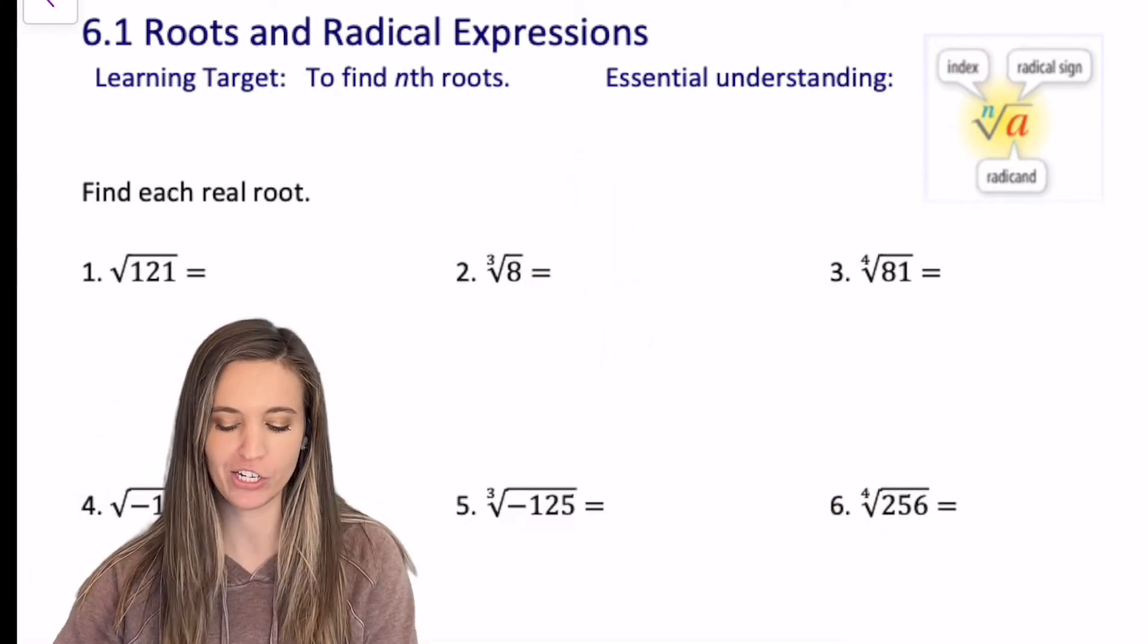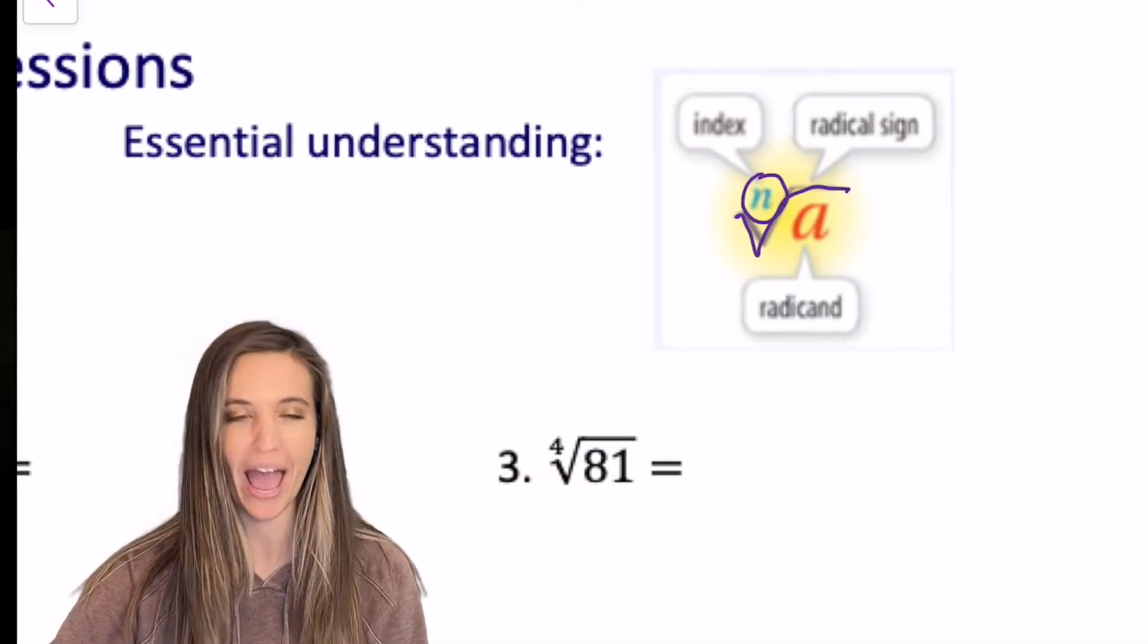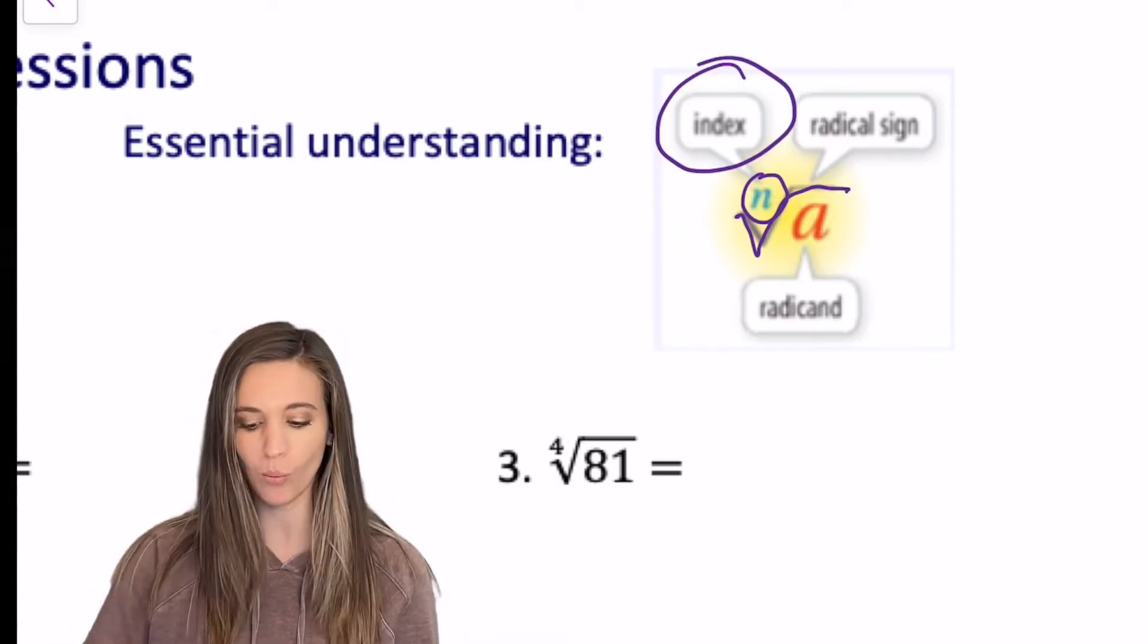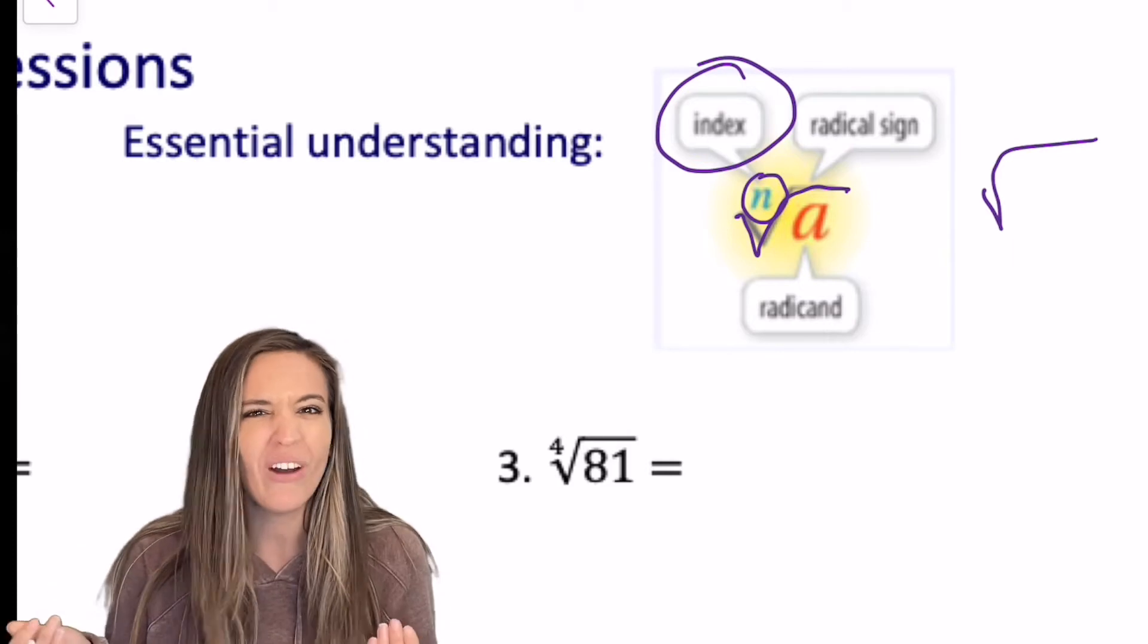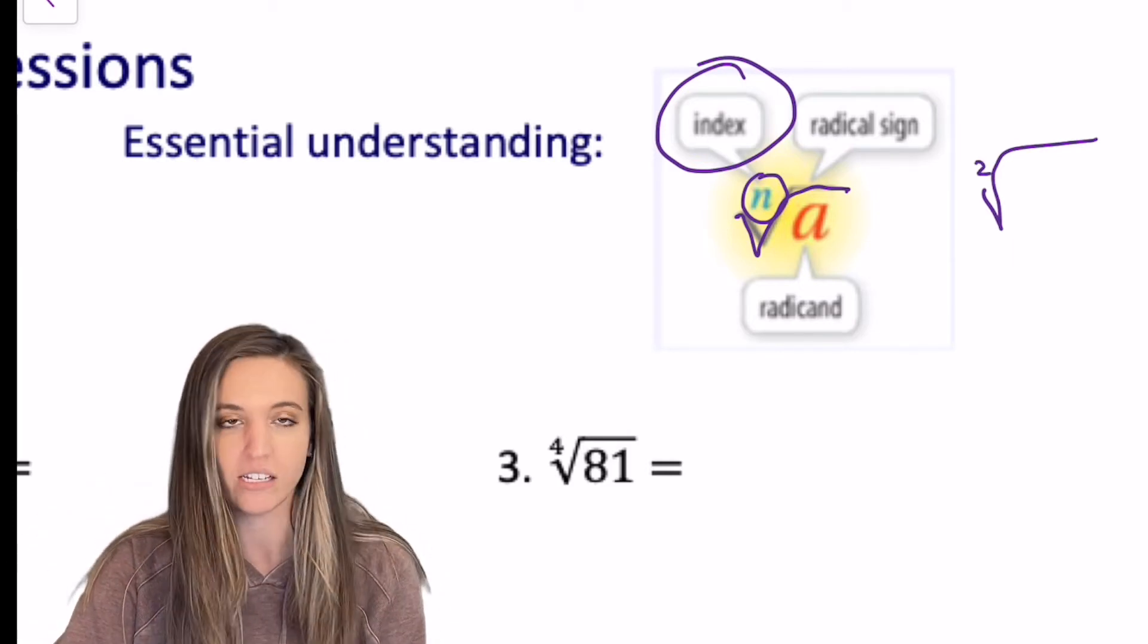What we want to make sure we understand is what all these little parts are called. So we have this root right here, and this value n, the nth root, that is called the index. So when we just have a square root, we don't actually write an index in there, but when we're taking the square root, the index is really two.